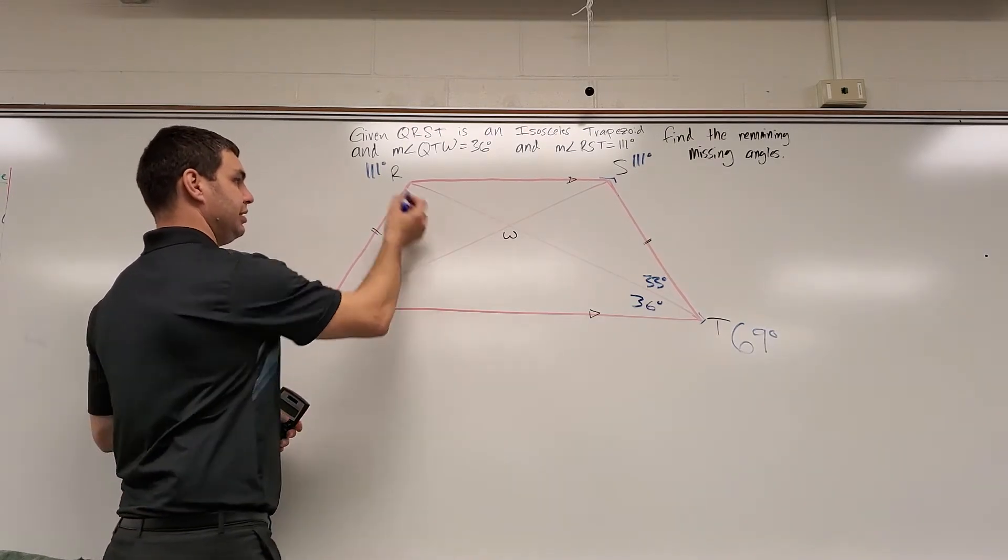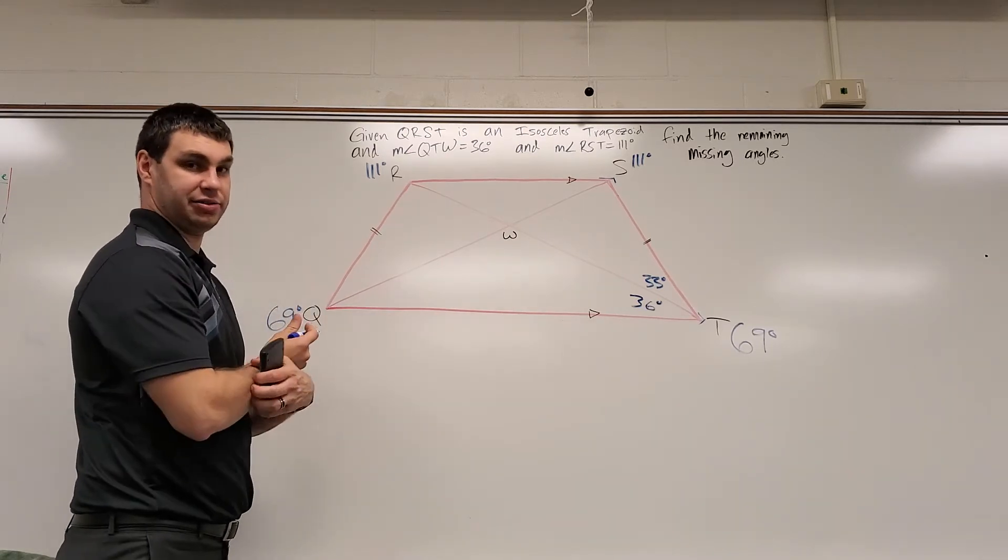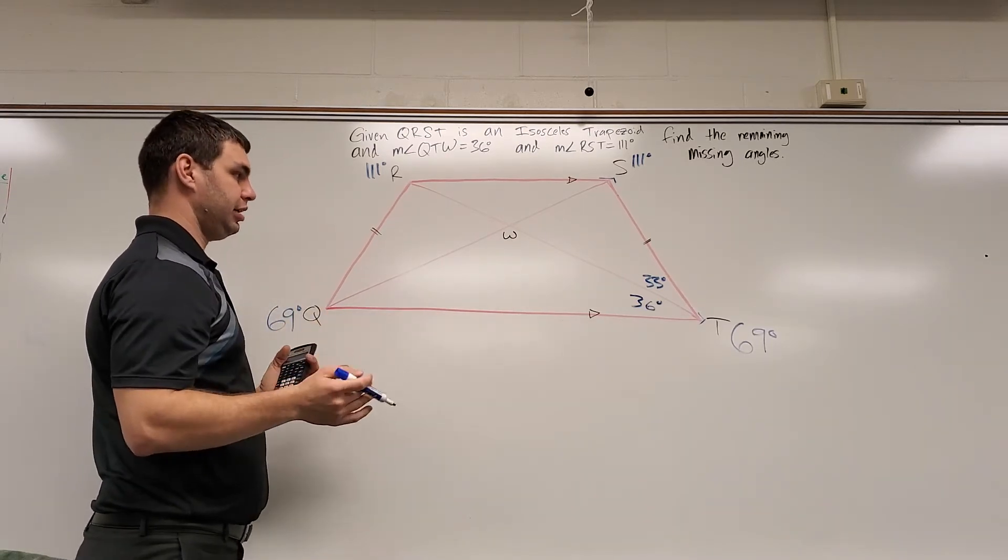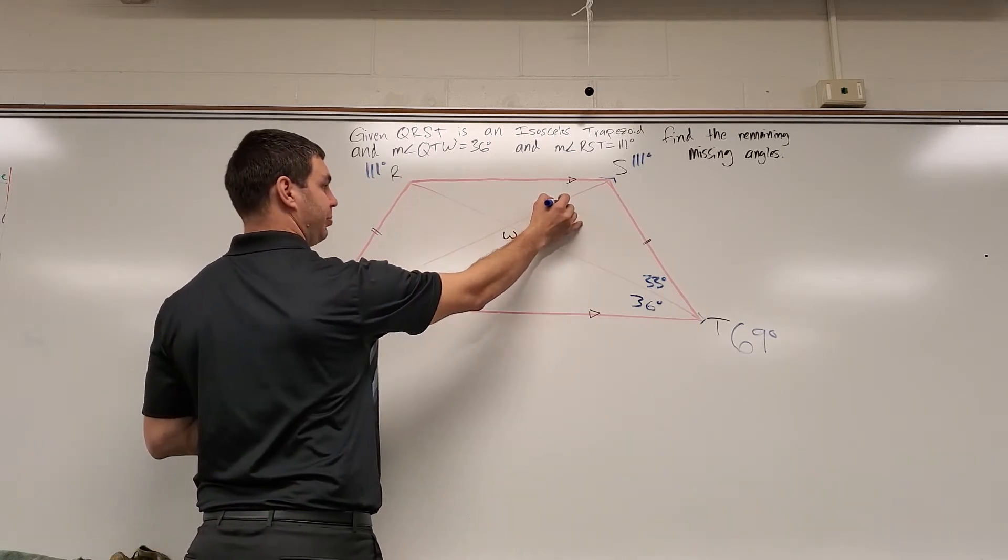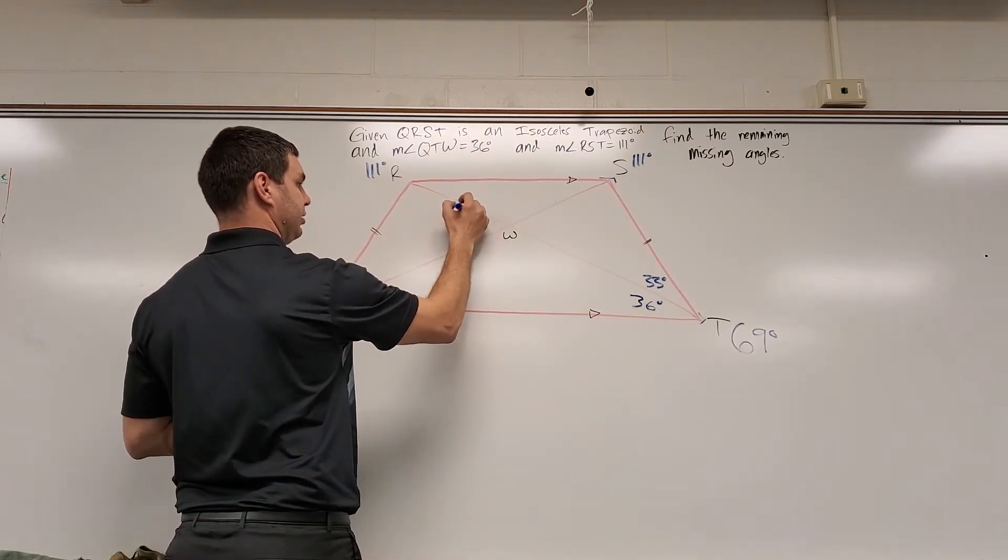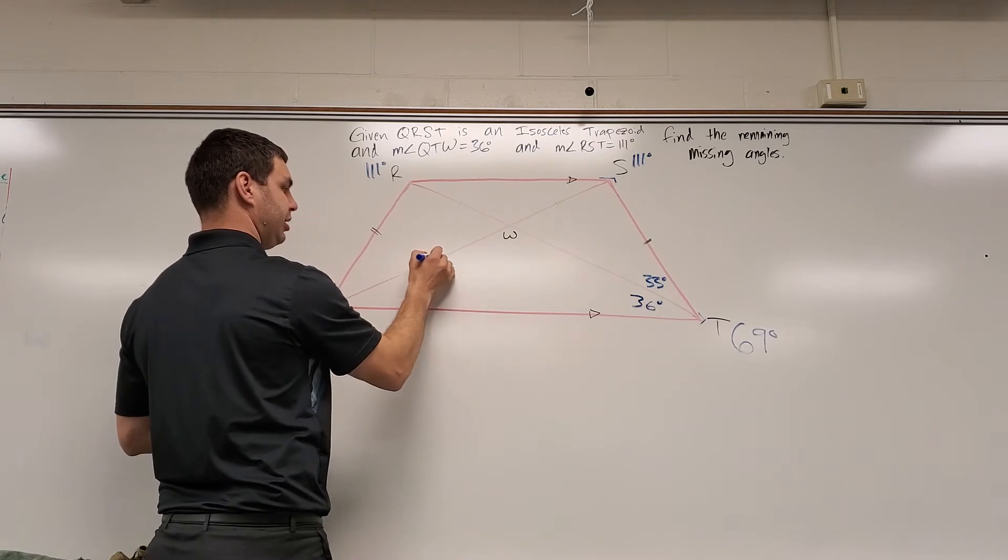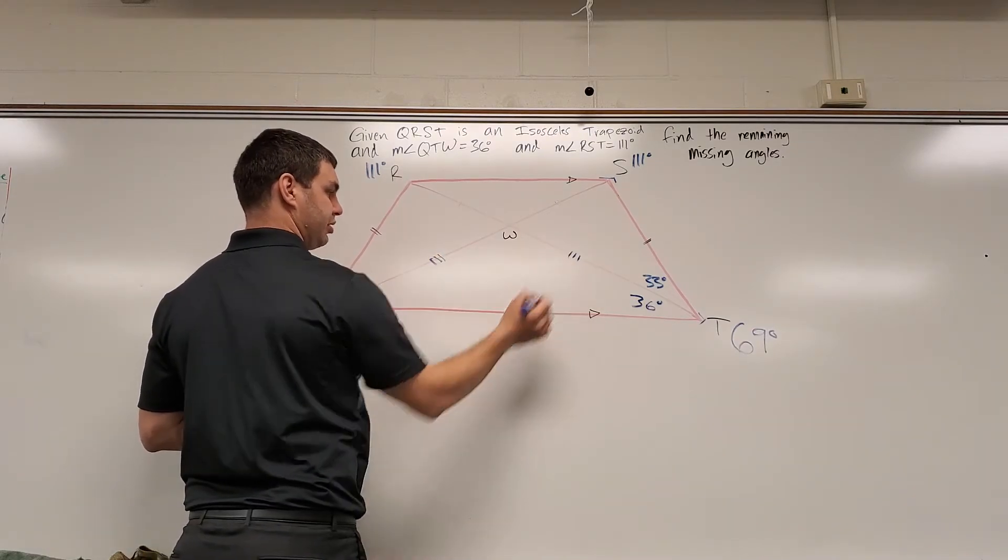Similarly, the diagonals in an isosceles trapezoid are congruent. So since those are congruent, I know this top piece, those are congruent to each other. And this bottom piece, those are congruent to each other.